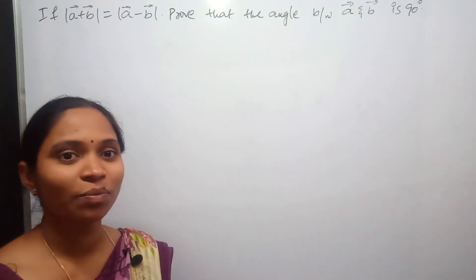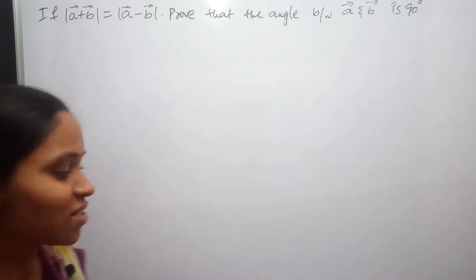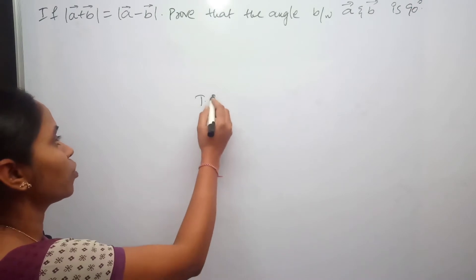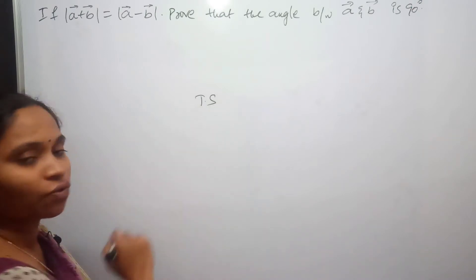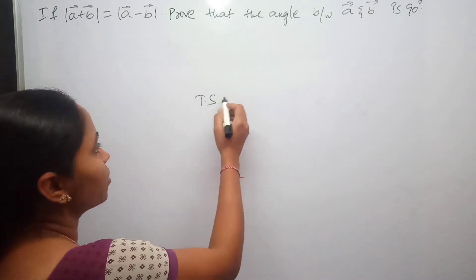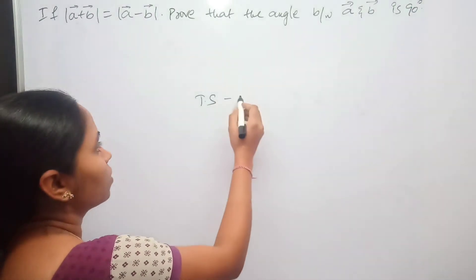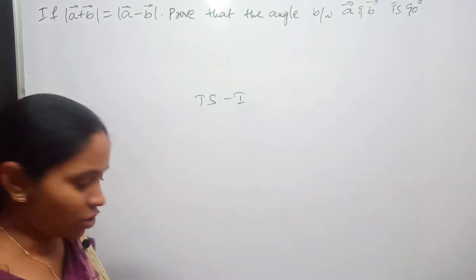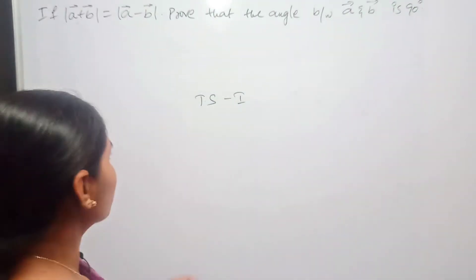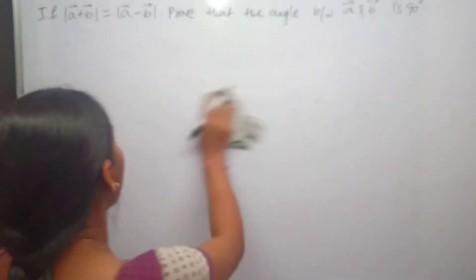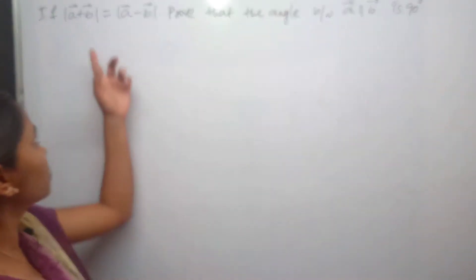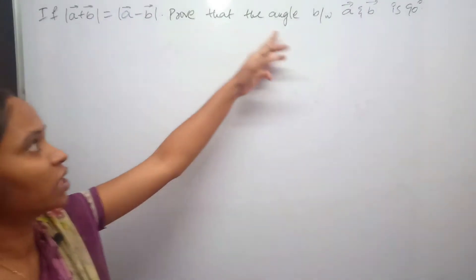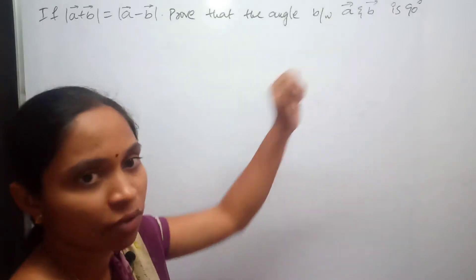Hello students, welcome to Swapna Physics Classes. In this lecture I am going to explain one more important short answer question for your Telangana State Board first year intermediate IPA examination. The question is: if the modulus of a+b is equal to the modulus of a-b, prove that the angle between vector a and vector b is 90 degrees.